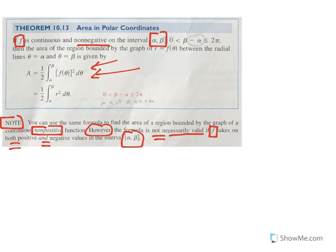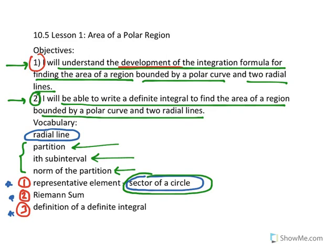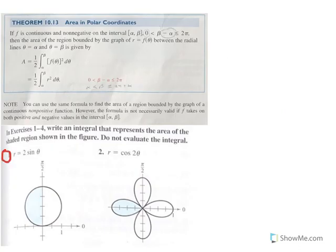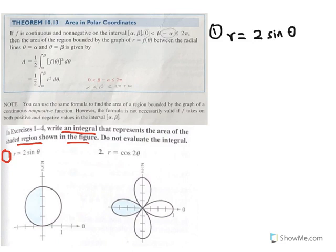We will conclude by looking at an example for objective 2: writing a definite integral to find the area of a region bounded by a polar curve and two radial lines. Number 1 is one of the problems from your homework tonight. Write an integral that represents the area of the shaded region shown in the figure — do not evaluate the integral. Our polar equation is r equal to f(theta), where f(theta) equals 2 times sine of theta. The shaded region is the left half of the circle, which is the graph of the polar equation r equal to 2 sine theta.